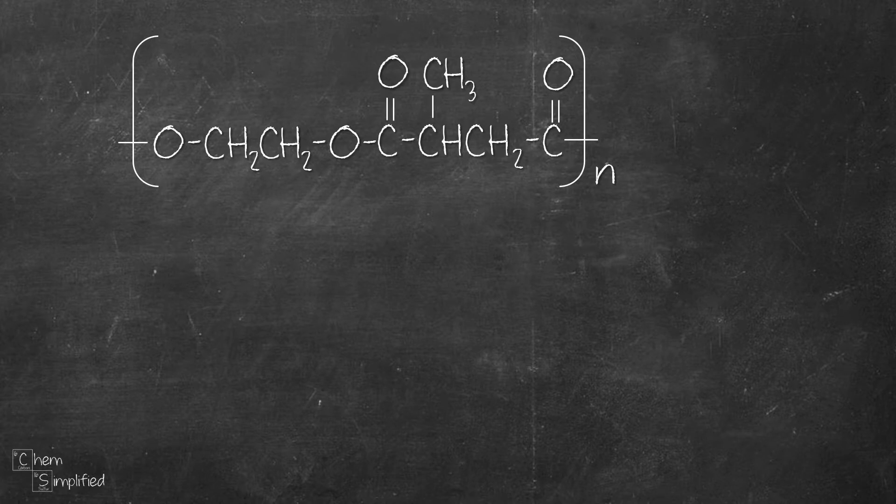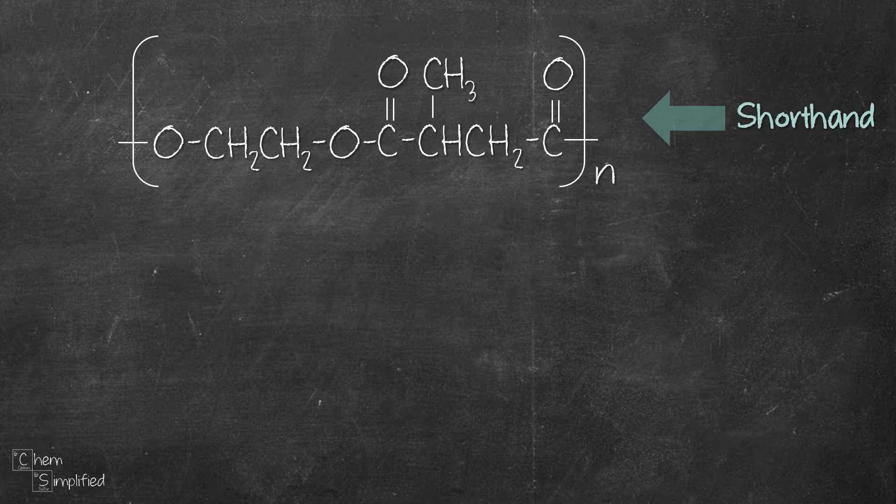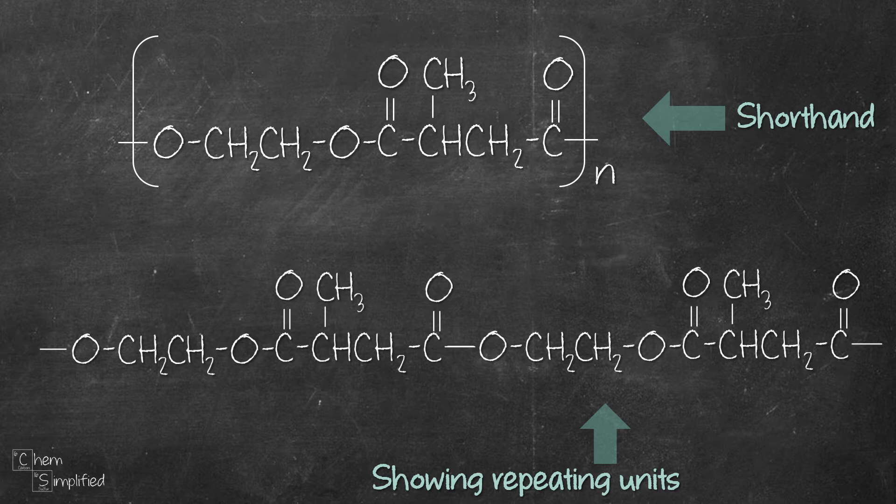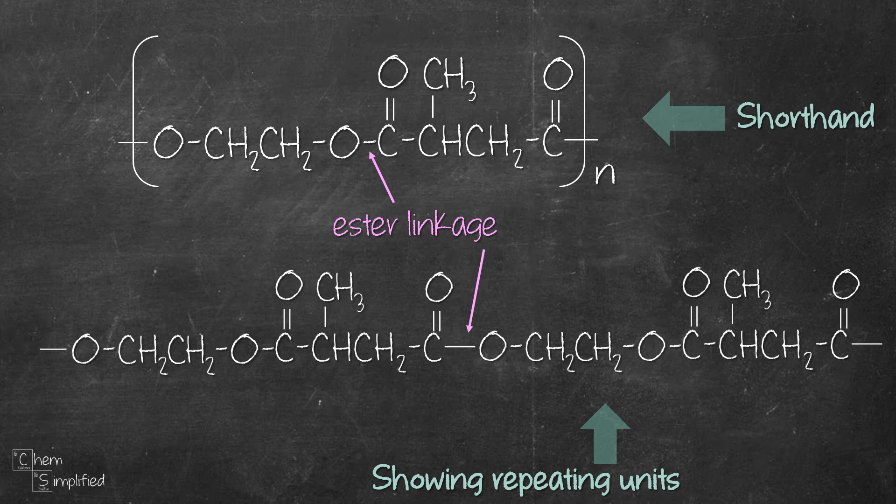Here's an example of a polyester. This is a shorthand structure of the polymer. Here we have a structure showing two repeating units. Monomers in polyesters are linked together through an ester linkage like this. I've posted a video on forming condensation polymer. Do check it out if you haven't seen it.